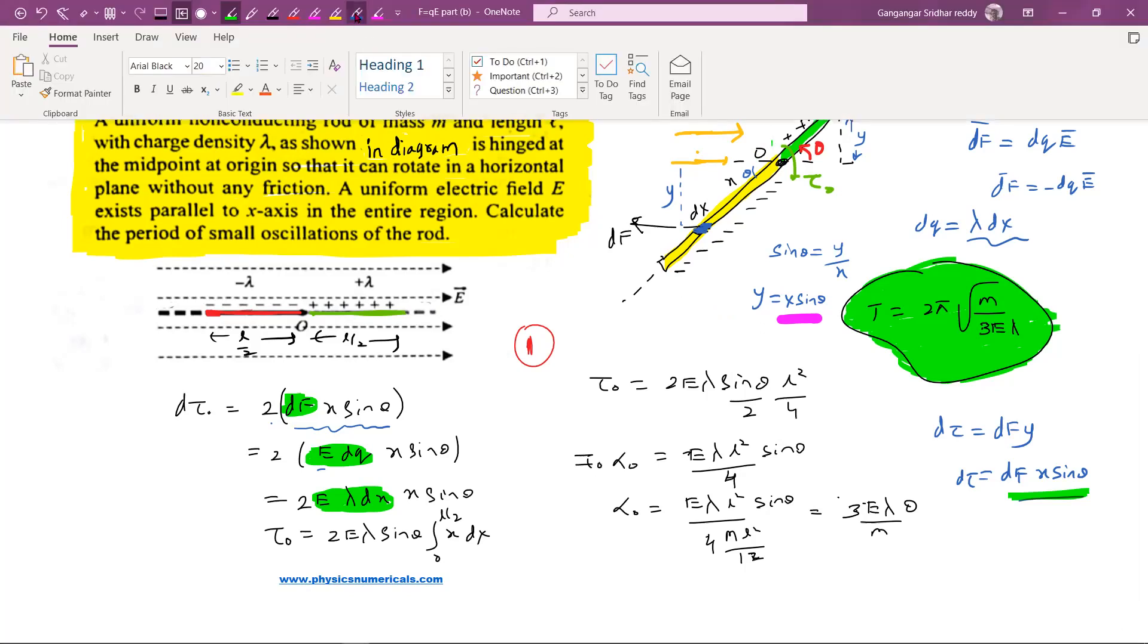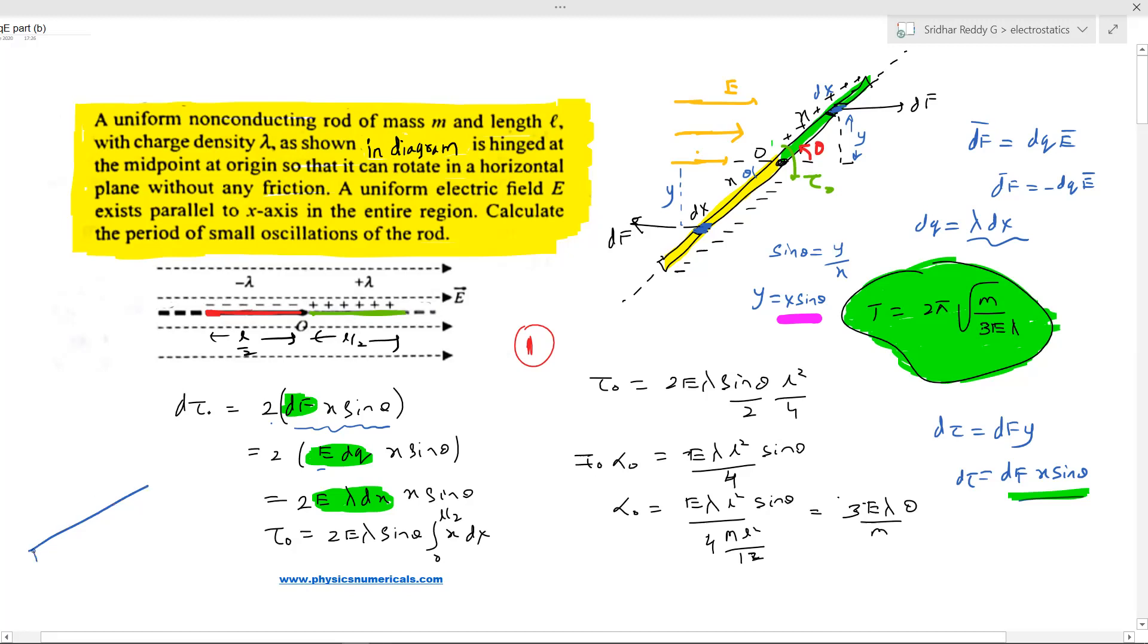Here x equals 0 to l/2, so this end of the rod is l/2. Sorry, this is x equals 0. I'll give one more diagram. I like to explain everything through diagrams so that it will be very easy. What will be the limit? The positive charge limit is 0 to l/2. Then this should be equal to the torque about point O: e λ sin θ times integral of x dx, which is x²/2, substituting upper and lower limits, giving l²/4.